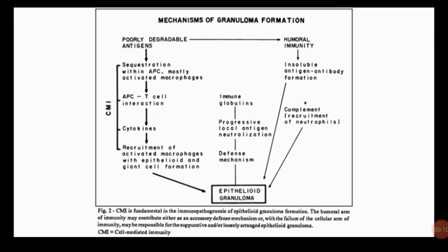There are basically two arms of immunity in the body. The first one is cell-mediated immunity and the second one is humoral immunity. Cell-mediated immunity is the prime role player here. On the left side of the figure, you can see that poorly degradable antigens lead to sequestration with the antigen presenting cell.